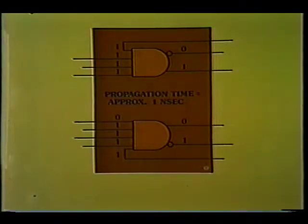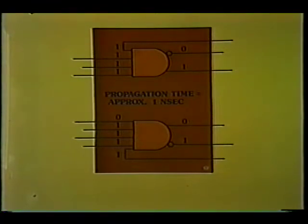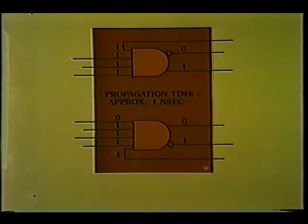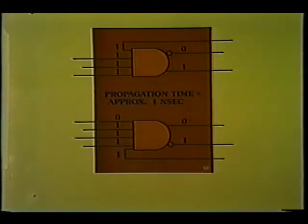The top AND gate illustrates that its logical operation is such that when all inputs are at a 1 level, the normal output goes to 1 and the inverted to 0. The bottom gate illustrates that when any one or more of the inputs go to 0, the normal output goes to 0 and the inverted to 1.